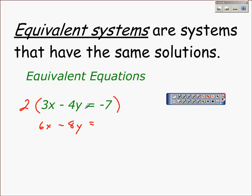And 2 times minus 7 is minus 14. What that really does for us then is allows us to use this equation here, 6x minus 8y equals negative 14, any time we see this equation, 3x minus 4y equals negative 7. Those are equivalent equations.